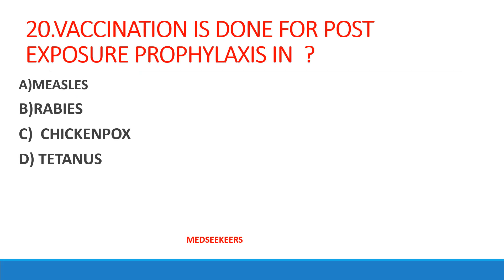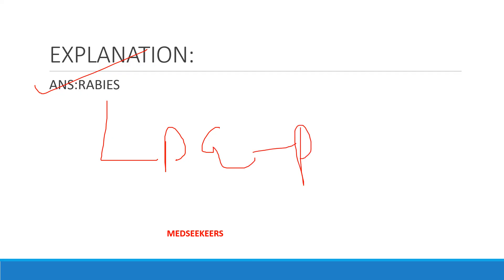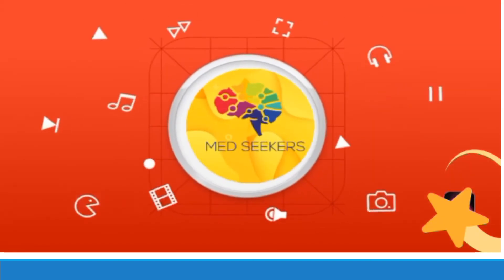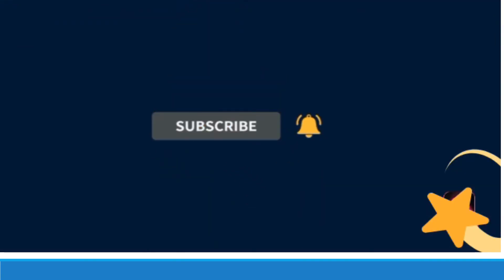Vaccination done for post-exposure prophylaxis is given in — option A: measles; option B: rabies; option C: chickenpox; option D: tetanus. The answer is rabies — soon after a dog bite we give post-exposure prophylaxis. I hope these questions are helpful. If so, please like the video. If you want more revision series videos, comment and let me know. Take care, stay safe, stay happy.